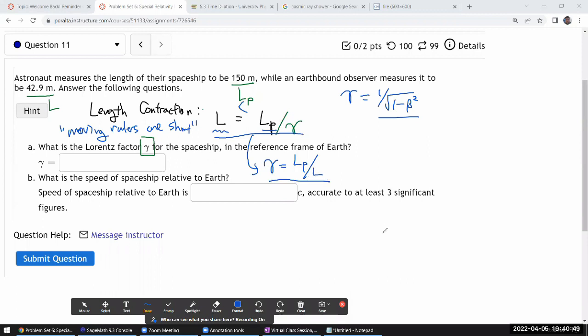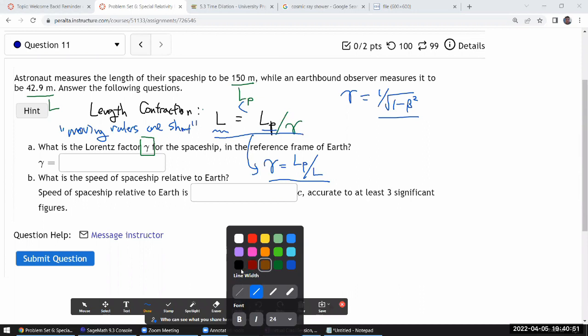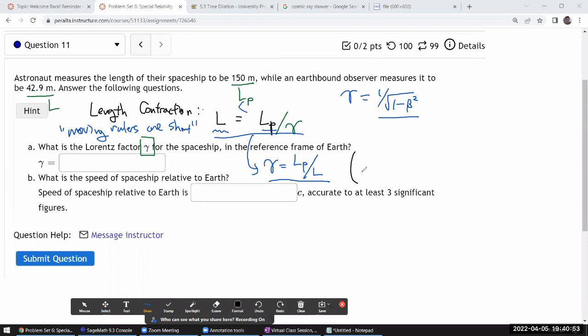And you can actually get a similar kind of expression if you are working with time dilation. There you would say, okay, gamma is the dilated duration of time divided by the proper time.